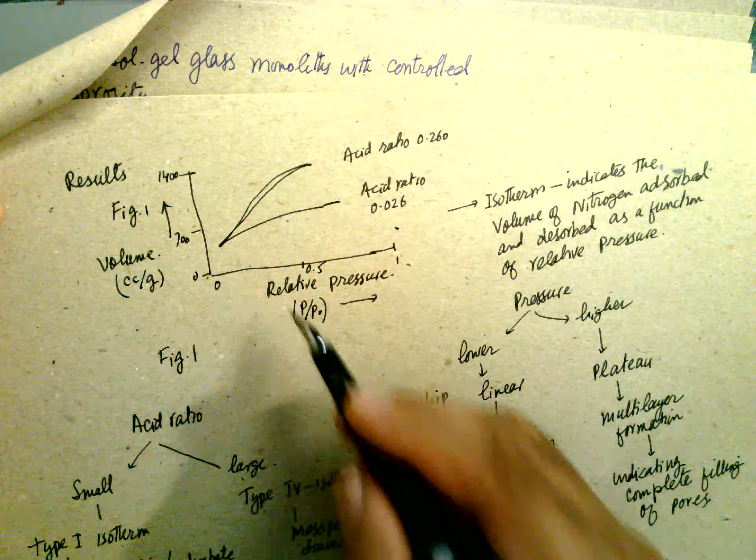Gelling, drying is 60 to 130, and stabilization happens at 600 degrees C.